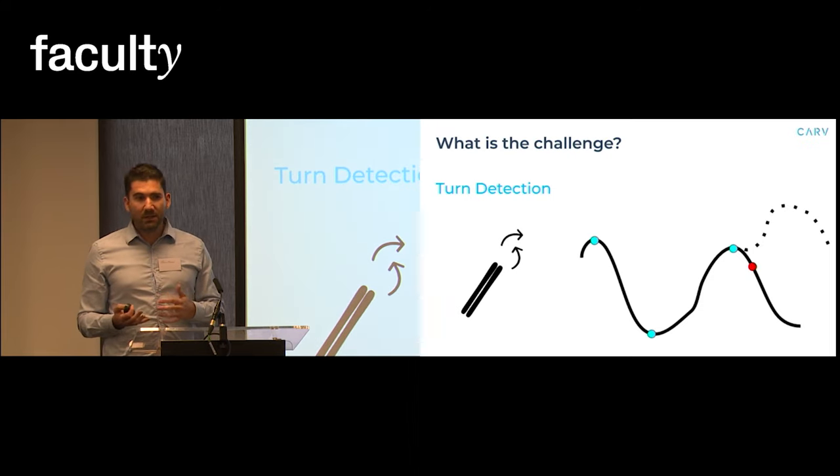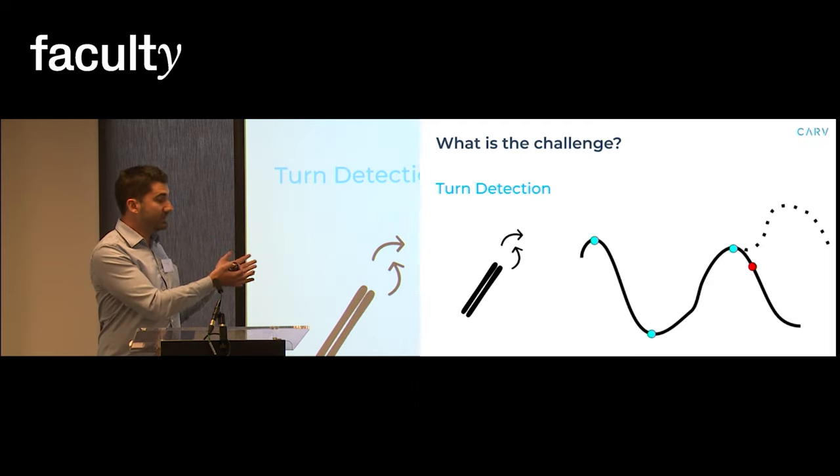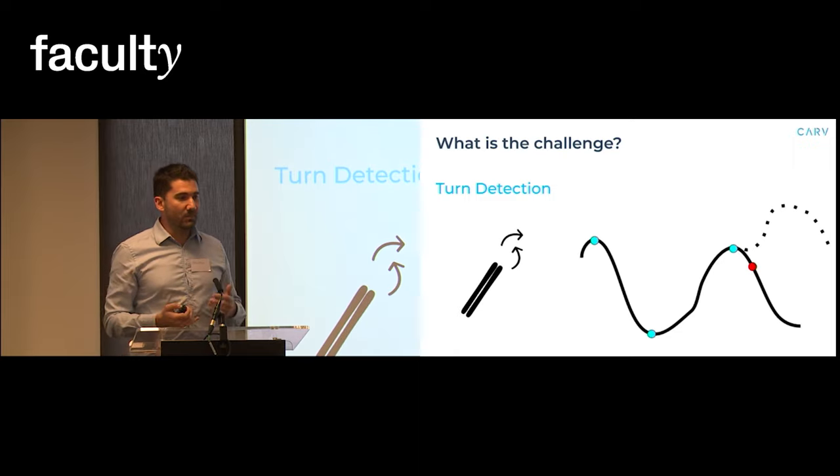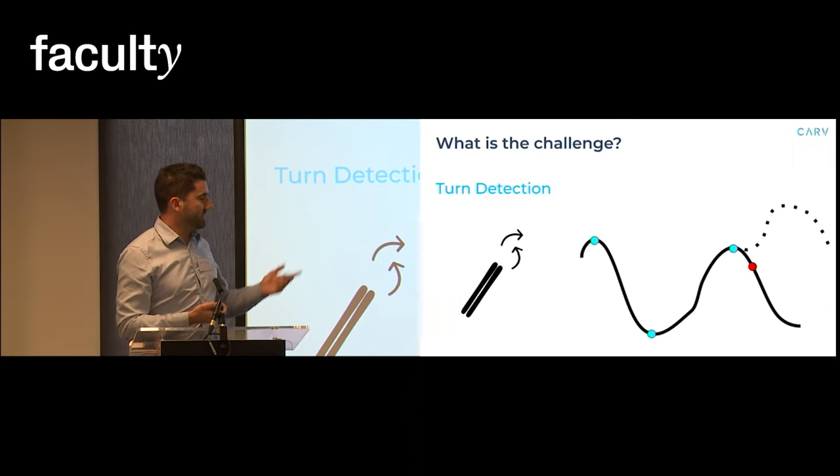The problem with that is that the user experiences a feedback delay that comes from the turn detection that happens at the red dot which is actually for the turn that happens much before which you see as the blue dot.